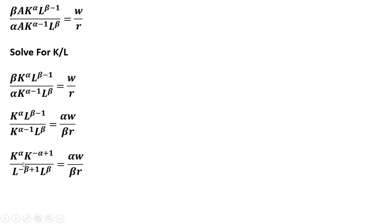We're just going to add up the exponents here. The alpha minus alpha cancels and we're just left with K. In the denominator, this minus beta plus beta cancels and we're just left with L. So we got K divided by L equals the following.